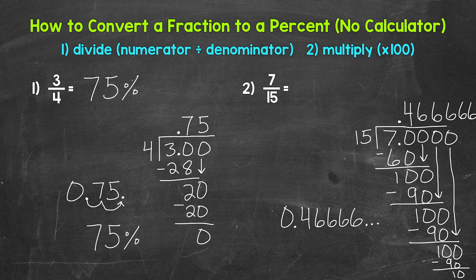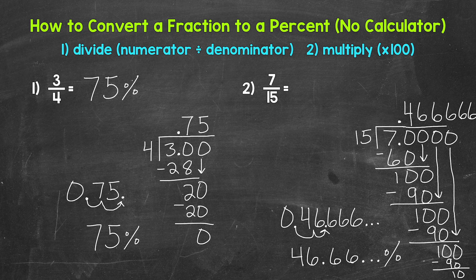So we have a few different options here. We have our decimal, so we need to multiply by 100. Let's move the decimal once, twice to the right. So we end up with 46.6 repeating percent. The first way we can write this: 7/15 equals 46.6 with a bar over the six to show that that digit repeats, percent.